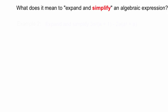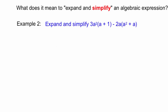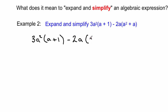Now let's look at what it means to expand and simplify an algebraic expression, because in many cases you've got to do both. Here's an example that seems quite complicated, but we're going to work through it. There are negatives and positives, we're going to use index powers, and we'll need to simplify at the end. We write it out: 3a squared brackets (a + 1) — there's our first expansion — and here's our next expansion.